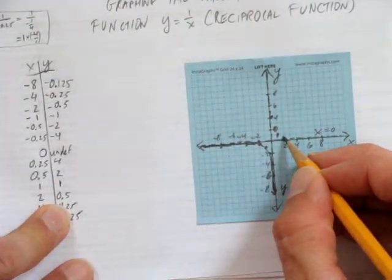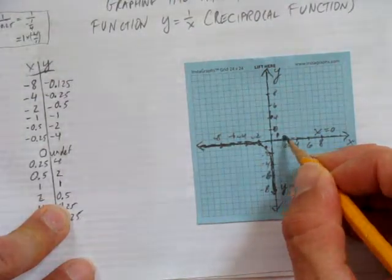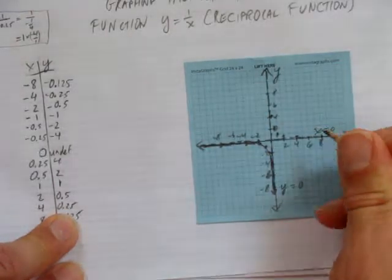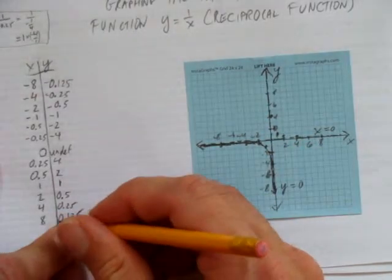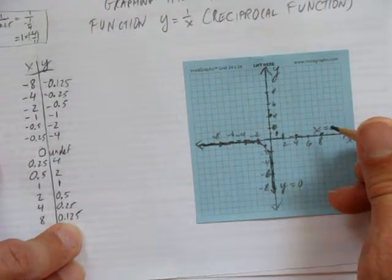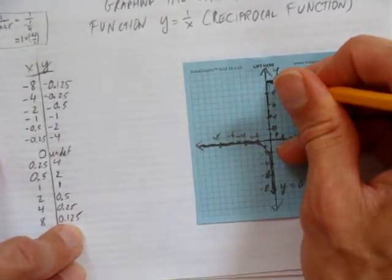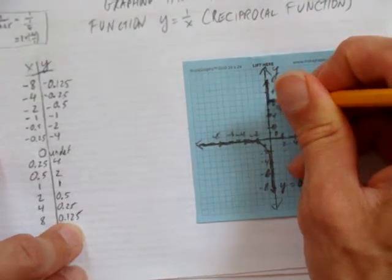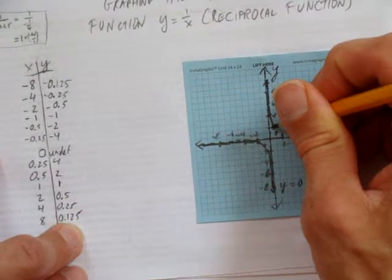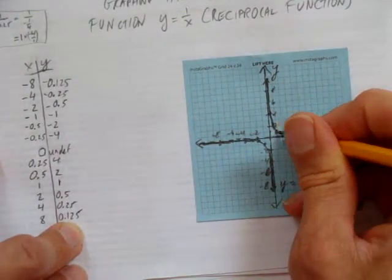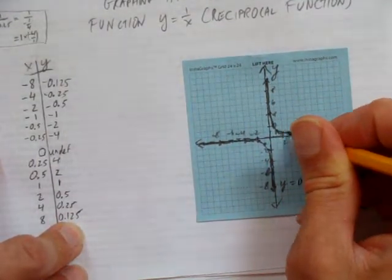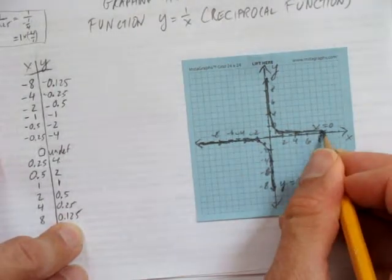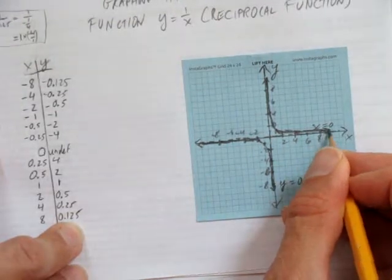But now we're going to start to close in on the x-axis. When you get to x of 2, you're only at a height of 0.5. And when you get to x of 4, you're only at a height of a quarter. And when you get to x of 8, you're barely above at 0.125. So again, this same sort of pattern is, this shape, this reciprocal function stays really close to the y-axis, and only starts to curve out as it approaches the x-axis, and then once again closes in on that other axis, in this case, an asymptote, and approaches it, but never touches it.